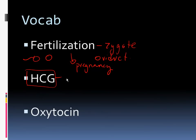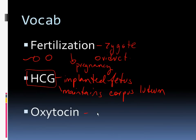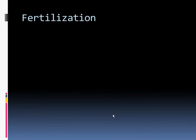HCG is going to be the hormone that is released from the implanted fetus, and this is going to be the hormone that maintains the corpus luteum. This hormone is what is going to prevent the cycle from ending. Oxytocin is going to be the hormone that is released in and around childbirth, and is a positive feedback loop.